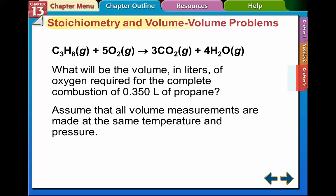So a typical problem would look like this. We're doing volume to volume ratios where everything is a gas in the equation. What will the volume in liters of oxygen require to complete the combustion of 0.35 liters of propane? In all these equations, unless they tell you different, you're going to assume that all these gases are at the same temperature and pressure.